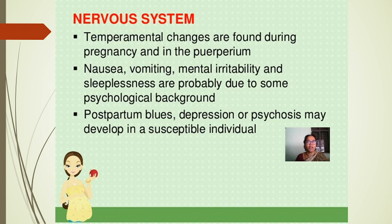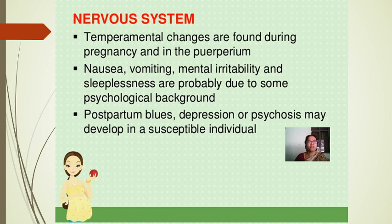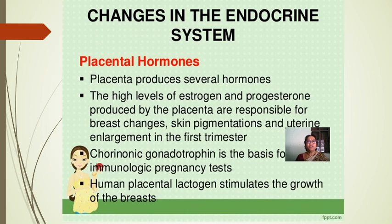Nervous system: temperamental changes are found during pregnancy. Nausea, vomiting, mental irritability, and sleeplessness are probably due to psychological factors. Postpartum blues, depression, or psychosis may develop in susceptible individuals because of all these changes.